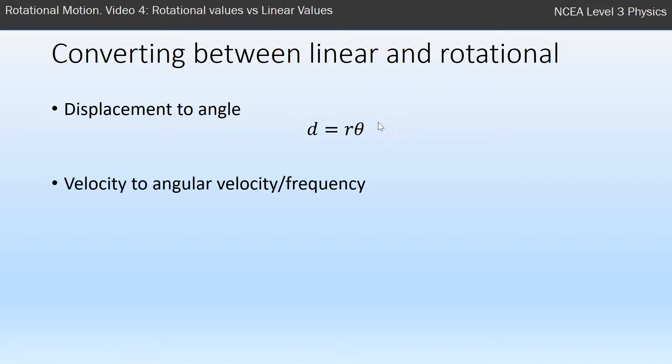If we want to change angular velocity to velocity, our omega, which is our angular velocity, is simply times by the radius to give us our linear velocity. So we can turn radians per second into meters per second just by times by the radius. Another example of the power of having everything in radians.